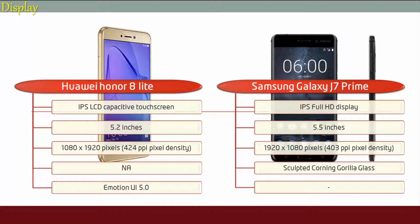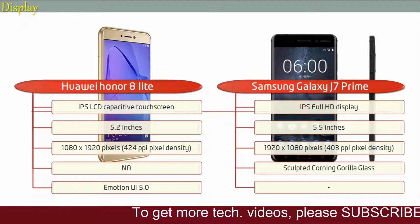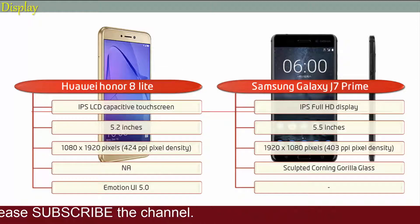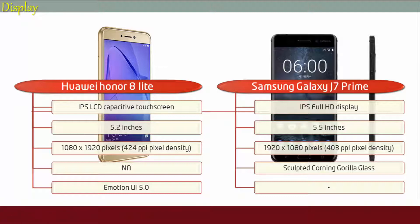Moving on to display, the Honor 8 Lite is a 5.2-inch device with an IPS LCD display having a resolution of 1080 x 1920 pixels with 424 ppi pixel density and Emotion UI 5.0. Whereas the Nokia 6 is a 5.5-inch device with an IPS full HD display having a resolution of 1920 x 1080 pixels and 403 ppi pixel density, with sculpted Corning Gorilla Glass 3 screen protection.